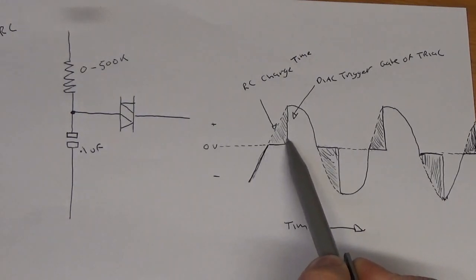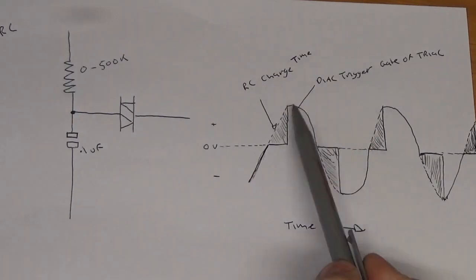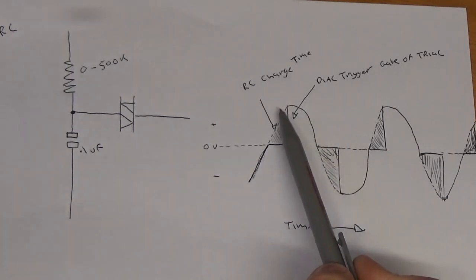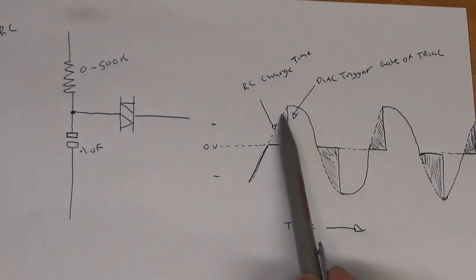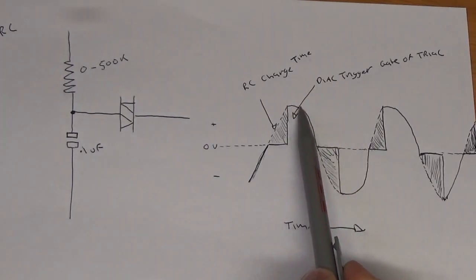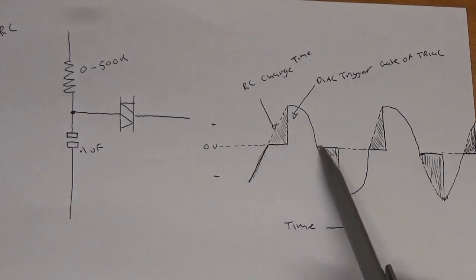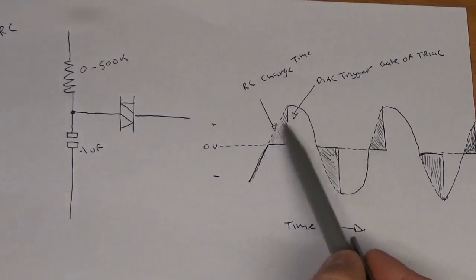The shaded area is going to be the RC charge time. As the RC network's charging until it reaches the 30 volt threshold for the diac, the diac snaps on, you can see that line there going straight up. Thus it's conducting through the gate of the triac, and the triac will start conducting until it reaches zero volts. Then the cycle repeats.